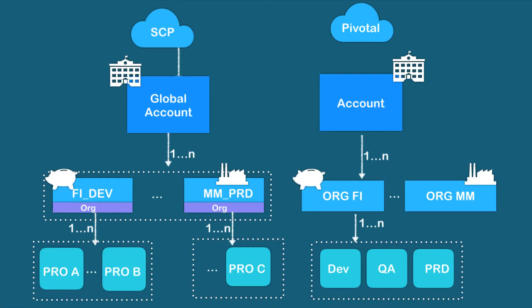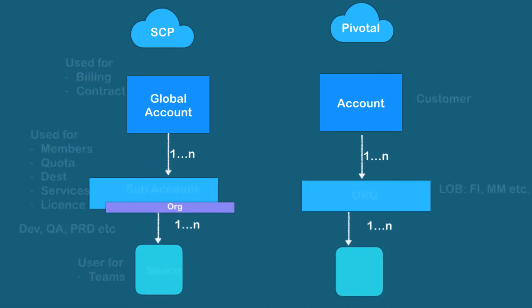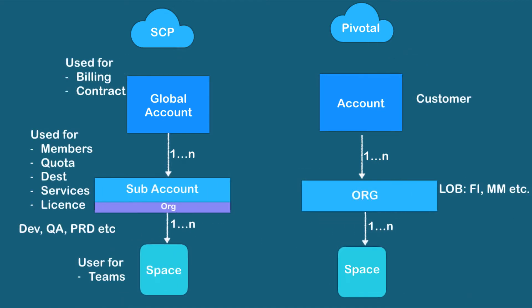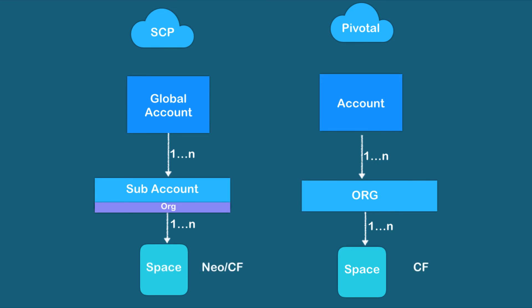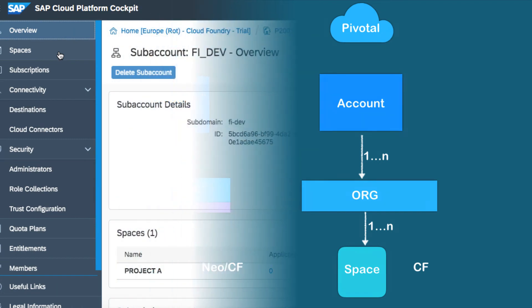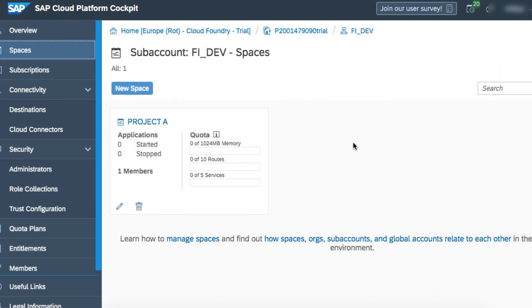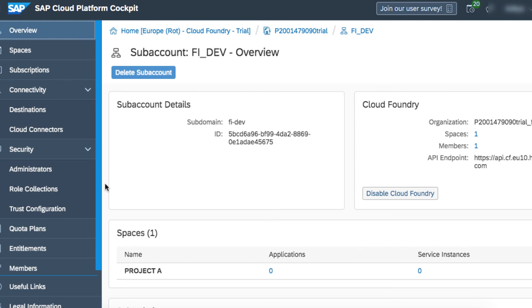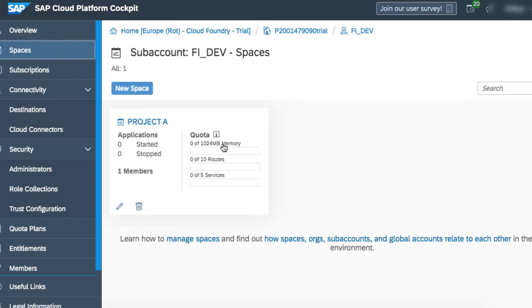After that, we will look into how, from a user account point of view, SAP Cloud Platform is presented to us. We are going to see how the global account, sub-account, and spaces are used, what their usage is, and how you will find the same setup in other Cloud Foundry providers like Pivotal as well. At the end, we are going to carry out hands-on steps to set up our SAP Cloud Platform account for Cloud Foundry.